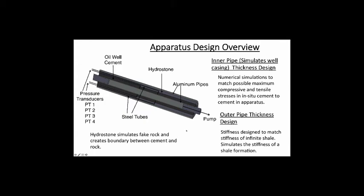This is a drawing of the actual apparatus. It shows the inner pipe, which is analogous to the casing, and the outer pipe. Both pipes are aluminum so we can CT scan them. Between the two pipes is a layer of hydrostone that simulates rock, and then a layer of oil well cement representing the annular cement in a well.